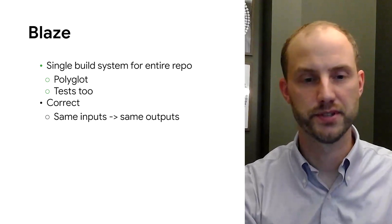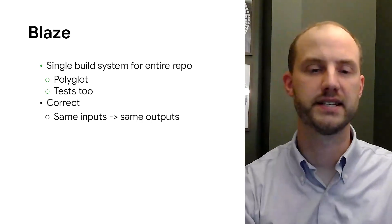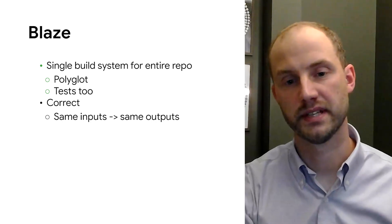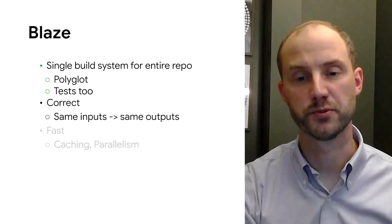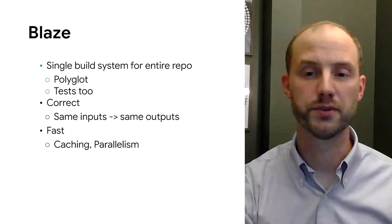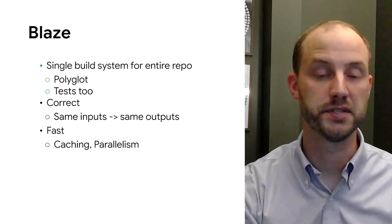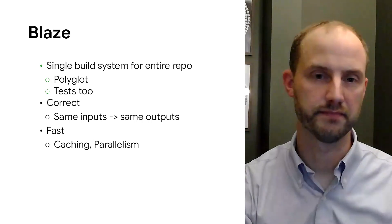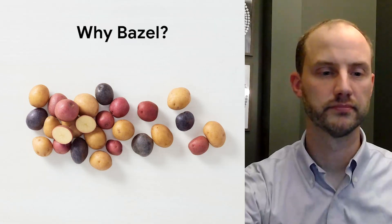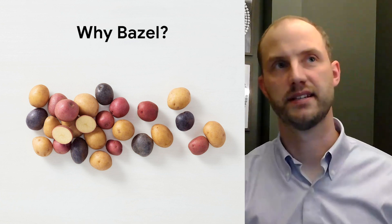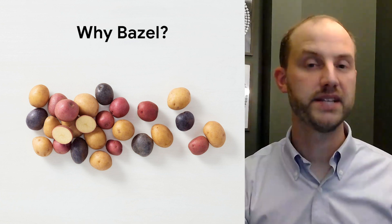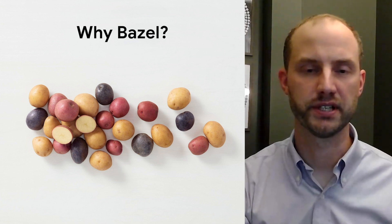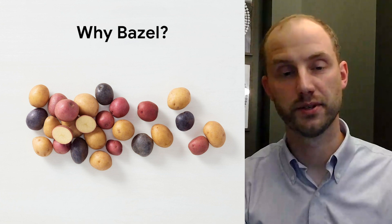With a huge repo all built from source, with practicing CI, builds get big and there are a lot of them. So we want a system that can do these builds as quickly as possible and reuse the results as much as possible, which is why Blaze is built to be fast through both caching and parallelism. So that's Blaze, and Bazel is based on Blaze.